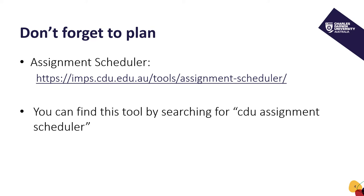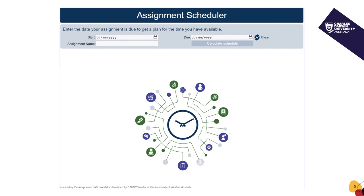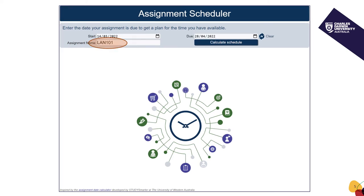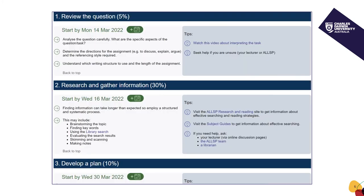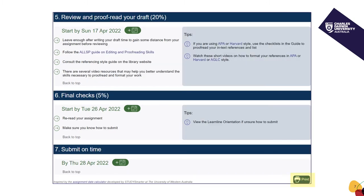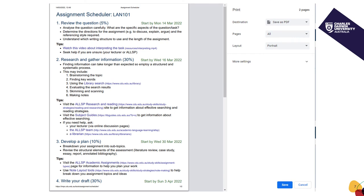Let's take a look at an example. This is the first screen of the assignment scheduler. It asks you to add a start date and a due date for your assignment. You should give the assignment a name and then calculate the recommended schedule. You will then receive a detailed timeline which breaks down the writing process into seven stages and includes additional videos, materials and recommendations to help you with your writing. You can also print the document in hard copy or save it as a PDF.